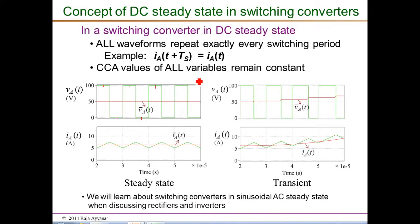This definition of CCA values being exactly constant defines DC steady state, which is suitable for analyzing DC-DC converters. Later, for DC-AC inverters and AC-DC rectifiers, we will define AC steady state where the CCA values are sinusoidal with constant frequency and constant amplitude rather than constant DC values. In the next part of this video we will look at basic concepts valid in DC steady state that are extremely useful in analyzing DC-DC converters.